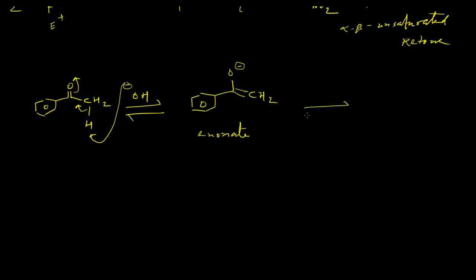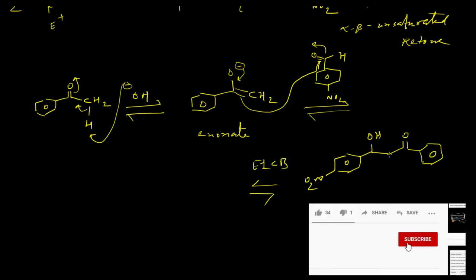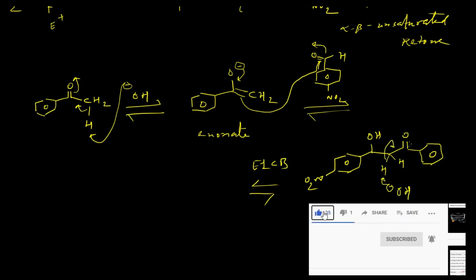In the next step, para-nitrobenzaldehyde will act as an electrophile, and the enolate will behave as a nucleophile and attack the aldehyde carbonyl center, which will eventually produce an intermediate. We know that in base-catalyzed reactions, E1cb elimination takes place. One of the alpha hydrogen atoms will be abstracted by the OH minus, producing the corresponding conjugate base.